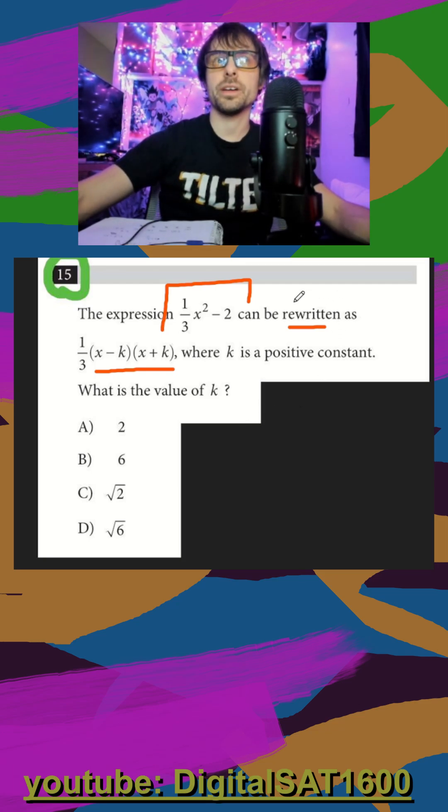I know Desmos can work because I can type this equation as equation one, I can type this as equation two with a constant for k, and then I just slide k until my two graphs are similar, right?